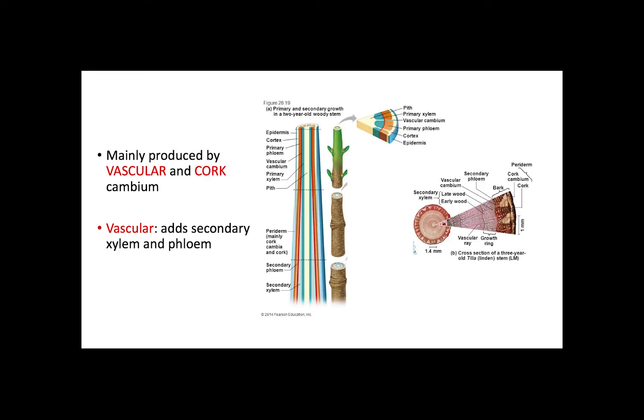Secondary growth consists of the tissues produced by the vascular and cork cambium. The vascular cambium is responsible for producing secondary xylem and phloem. In other words, the vascular cambium produces a secondary vascular system.